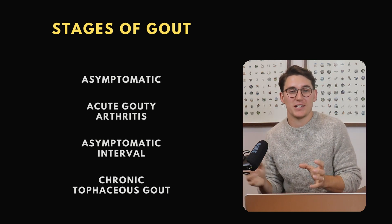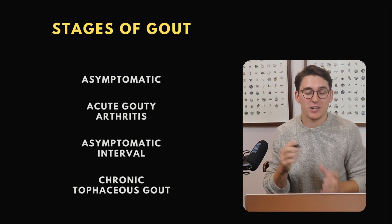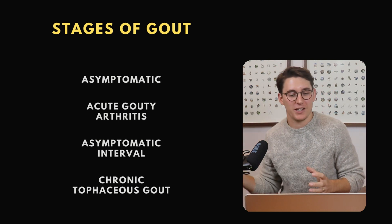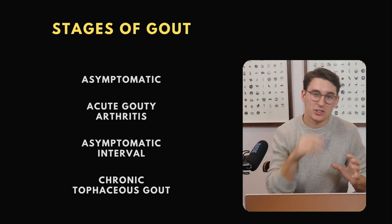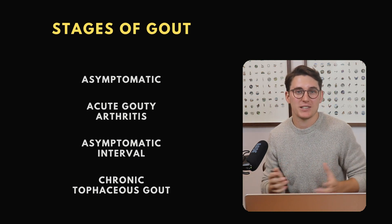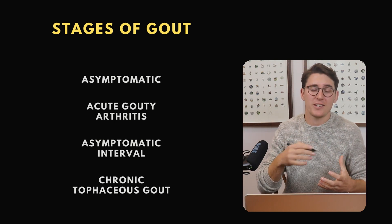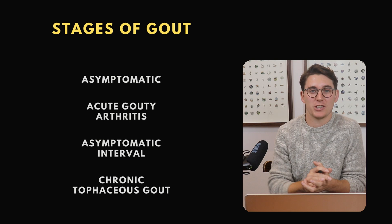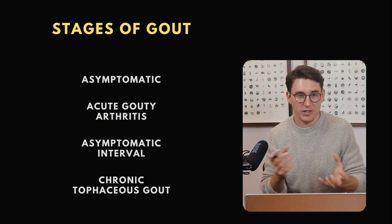This acute episode must be self-limiting and must be followed by a period of asymptomatic interval. This is a key feature of gout — many other arthropathies have consistent or persistent pain, whereas gout has these periods of acute flare-ups followed by asymptomatic intervals. The patient can cycle between these two stages for a long period of time. Left untreated, gout can progress to chronic tophaceous gout, where we get fibrous tissue deposition, chronic joint swelling with tophus formation, and potential calcification of the tophi.